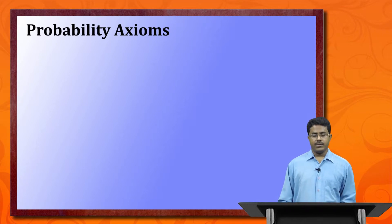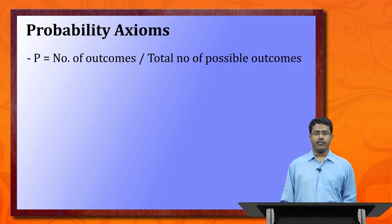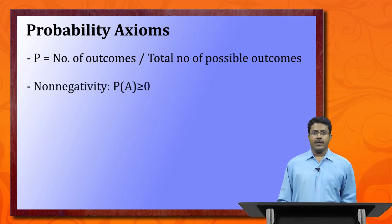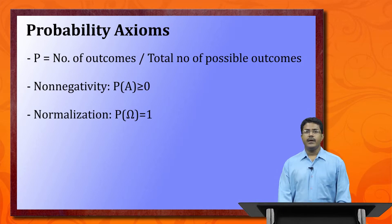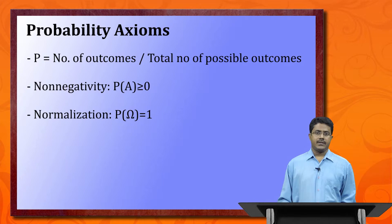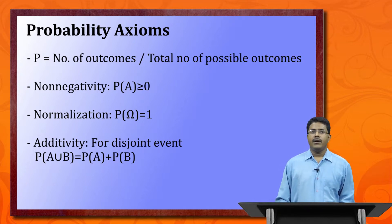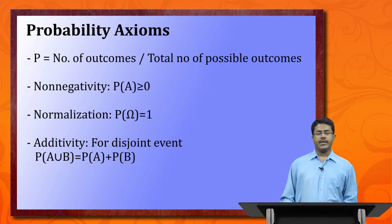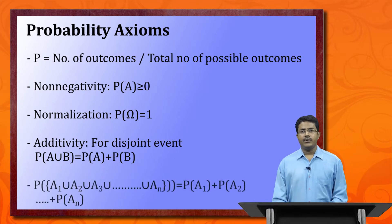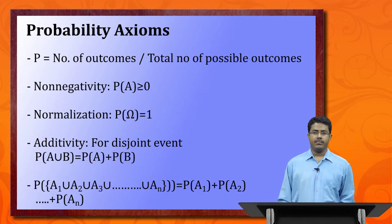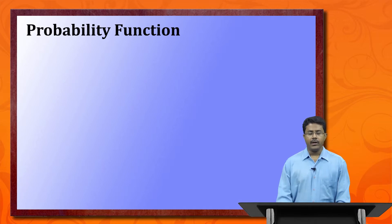Now we define probability axioms. Probability is defined as the number of outcomes divided by the total number of possible outcomes. The axioms are: first, non-negativity — probability of any event is always greater than or equal to zero. Second, normalization — all probabilities in the sample space must add up to one. Third, additivity — for disjoint events, P(A ∪ B) = P(A) + P(B), and this can be expanded for any number of events.